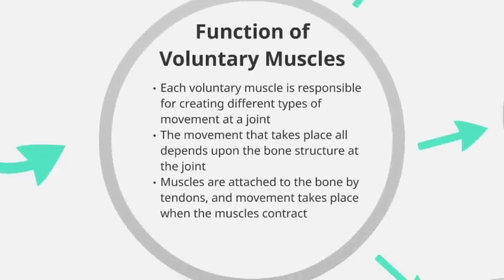The function of voluntary muscles is as follows: each voluntary or skeletal muscle is responsible for creating different types of movement at a joint. The movement that takes place depends upon the bone structure at the joint, since bones are all different shapes and sizes and that dictates the movement at a joint. Movement takes place because muscles are attached to bone by tendons, and movement occurs when the muscles contract — they pull upon the bones and allow that movement to take place.